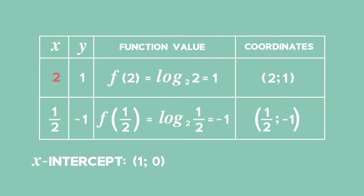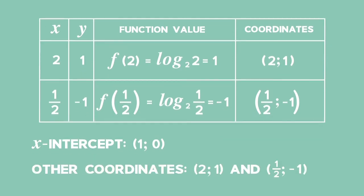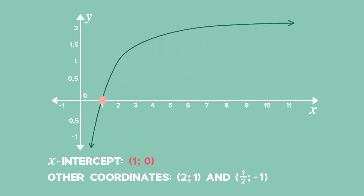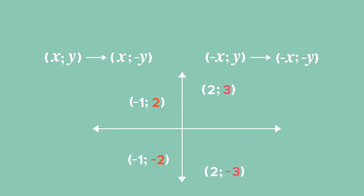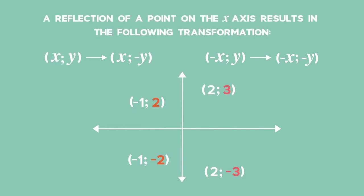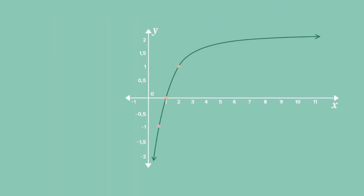If x equals 2, we substitute 2 into f of x and get a function value of 1. If x equals one half, we substitute x equals one half and get a function value of negative 1. Now you have the x-intercept and the two coordinates which you can use to draw the log graph. Recall that when we reflect a point around the x-axis, the x value stays the same and the sign of the y value changes. To sketch the graph of g of x, reflect f of x about the x-axis.